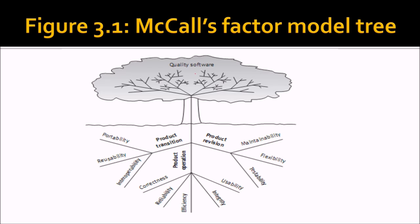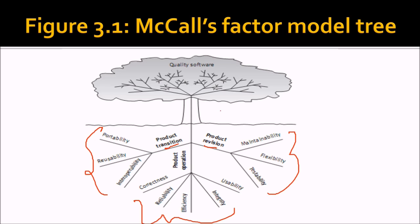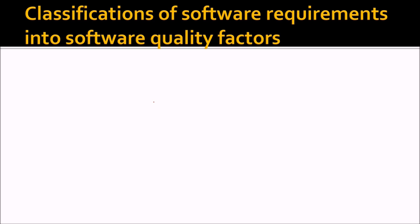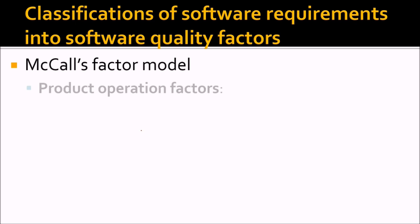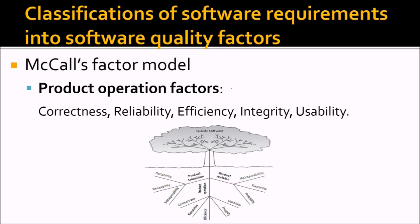McCall's factor model can be visualized as a tree. The root contains product transition, product operation, and product revision. These branches are further connected to different factors. The product operation factors include correctness, reliability, efficiency, integrity, and usability, which make the quality tree flourish and grow properly.